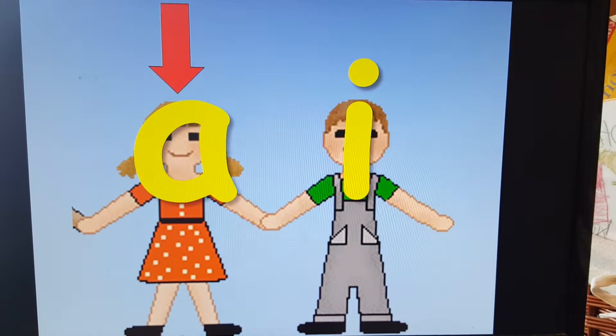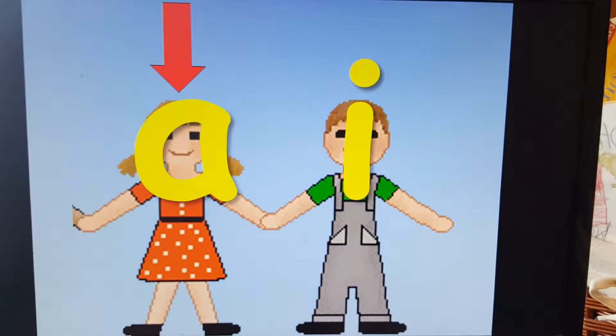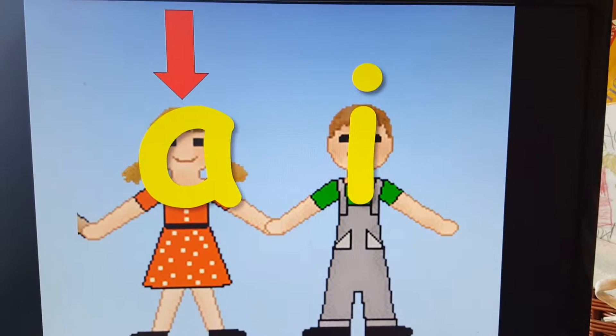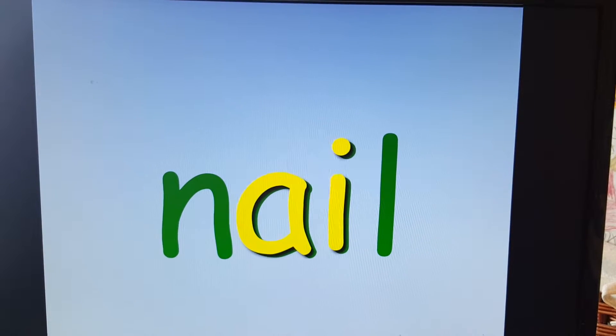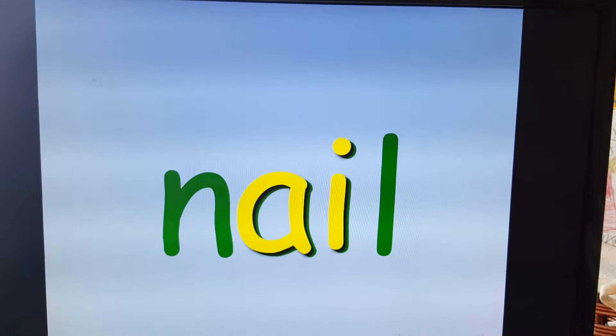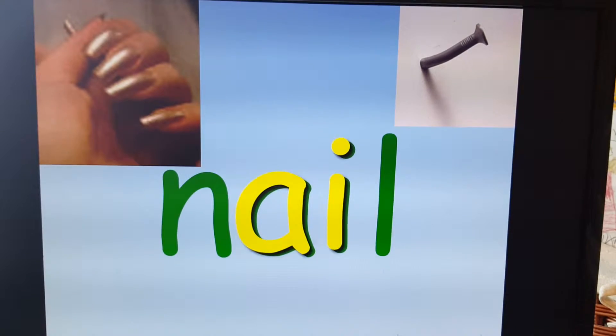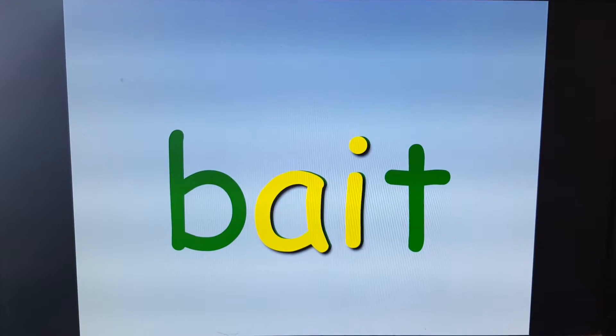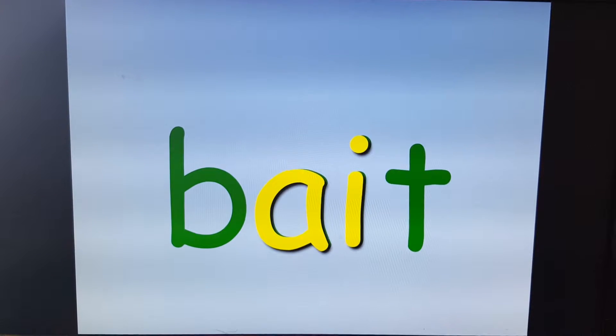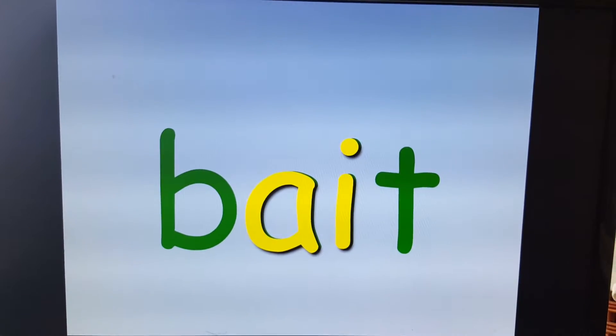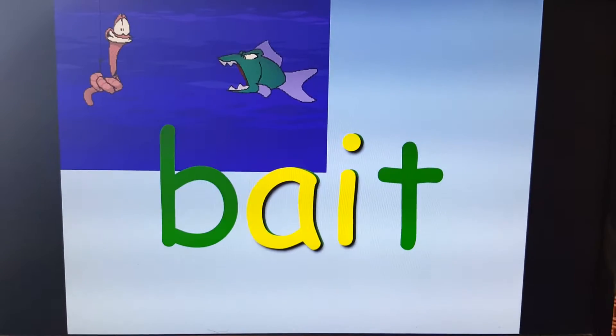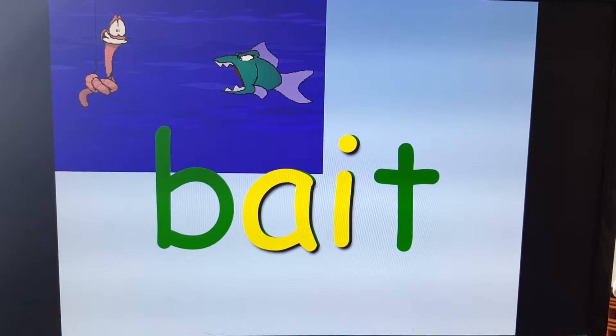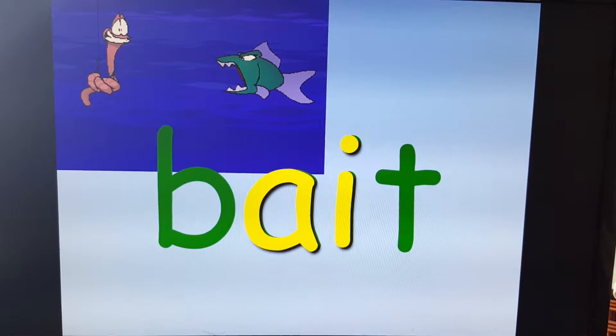All right, you know what this is. Two vowels go walking, the first one does the talking. So, nail, sure, nail. Your fingernail or a nail that you hammer in the wall. Good. Bait. I want you to say it before I say it. Bait. Mm-hmm. That poor little worm is the bait for the fish.